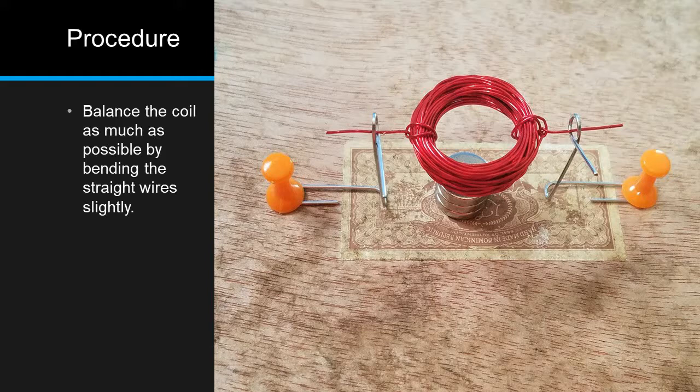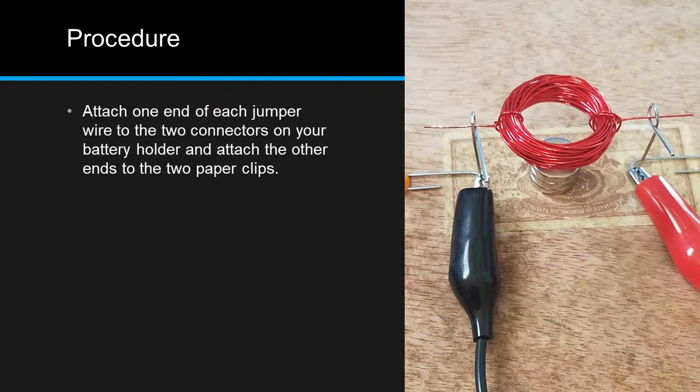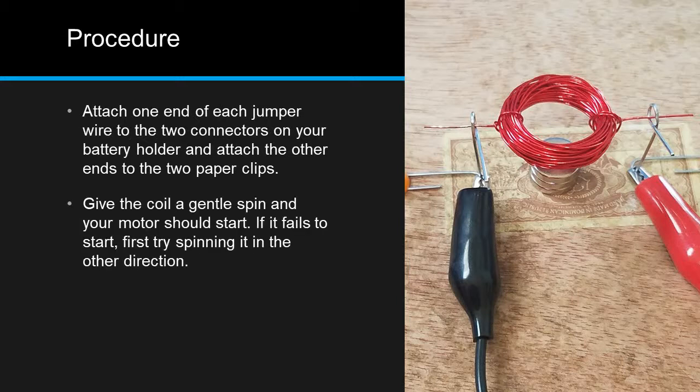Balance the coil as much as possible by bending the straight wire slightly if necessary. Attach one end of each jumper wire to the two connectors on your battery holder, and attach the other ends to the two paper clips. That's it! Give the coil a gentle spin, and your motor should start.